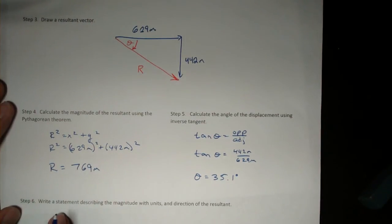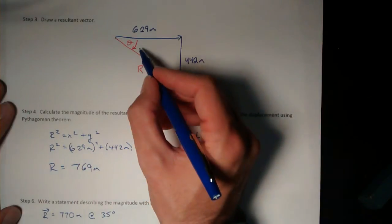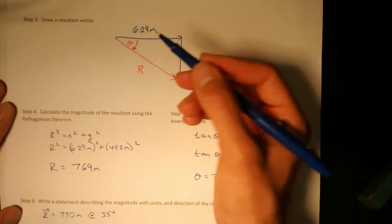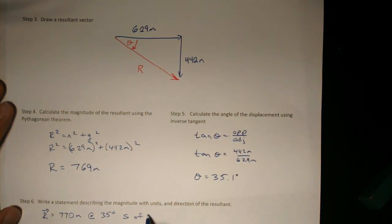Your final step is to write this resultant, which I want to write to two significant figures because my angles in the problem were given as two significant figures. So the resultant is 770 meters at an angle of 35 degrees. And we can see from this picture that we measured south of the east line.